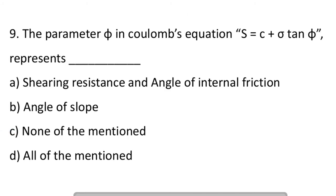Next question: the parameter phi in Coulomb's equation S equal to C plus sigma tan phi represents. Option A: shearing resistance and angle of internal friction. Option B: angle of slope. Option C: none of the mentioned. Option D: all of the mentioned. So the answer is A, shearing resistance and angle of internal friction.